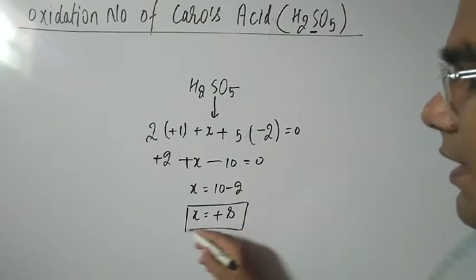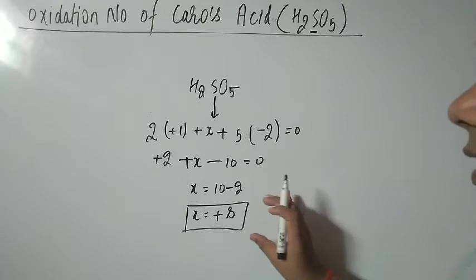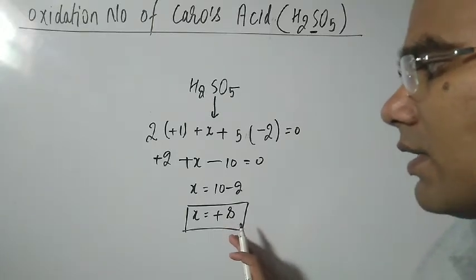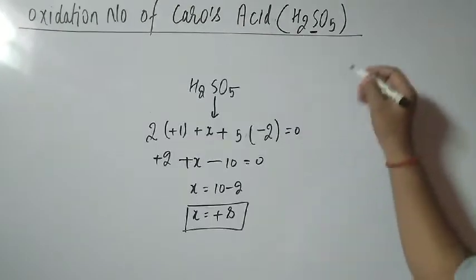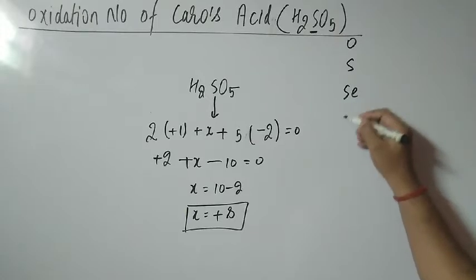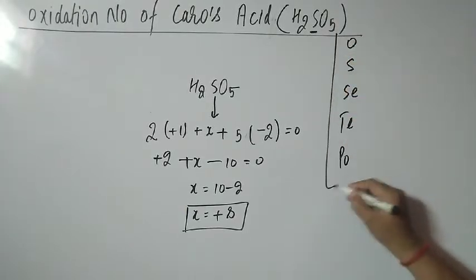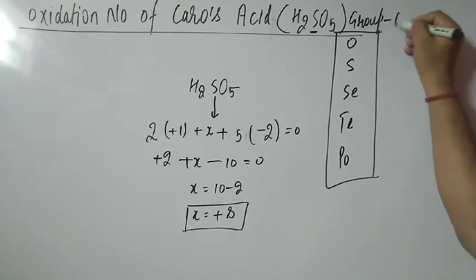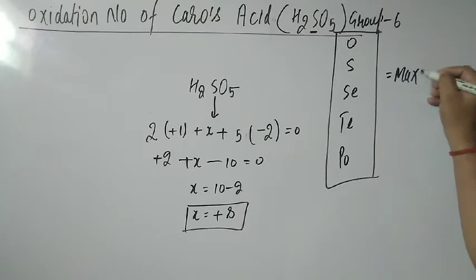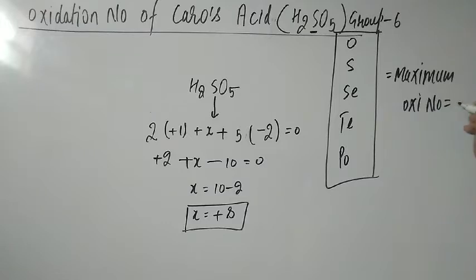Now, the oxidation number cannot exceed the group number. Sulfur, oxygen, selenium, tellurium, and polonium all belong to group 16. For group 16 elements, the maximum oxidation number is plus 6. So getting plus 8 is absolutely wrong.